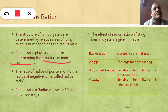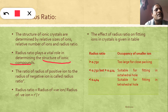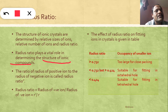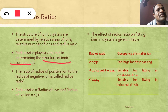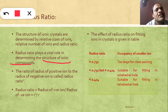To understand this, we have some values in a table showing the radius ratio value, the occupancy of the smaller ion, and the effect of radius ratio on the fitting of ions in crystals. If the radius ratio is greater than 0.732, the cation is too large for close packing. If the radius ratio is between 0.414 and 0.732, it is suitable for octahedral holes. If it is less than 0.414, the smaller ion is suitable for fitting into tetrahedral holes.